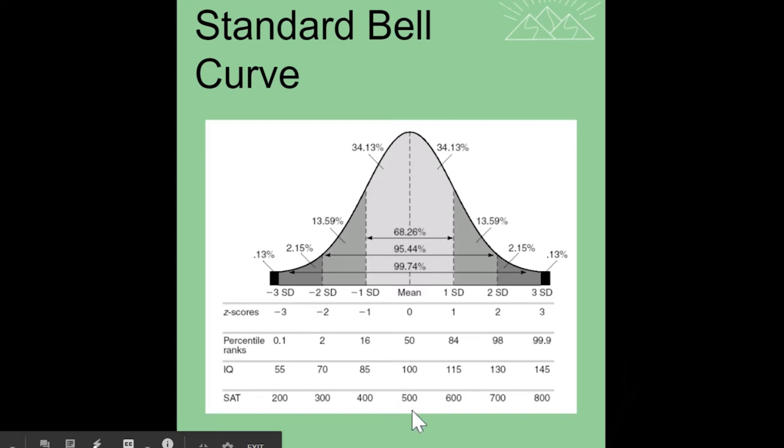Then each time we increase by one standard deviation, our score is going to increase comparatively. So if the average SAT score for example is 500, then every time the SAT score increases by 100 points, you move up one standard deviation. So if you scored a 600, you are one standard deviation above the mean. If you scored a 700, you are two standard deviations above the mean. If you scored an 800, you are three standard deviations above the mean.